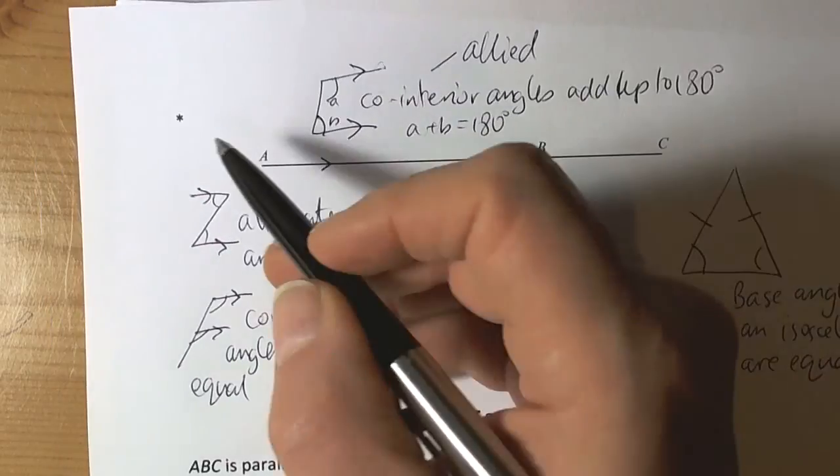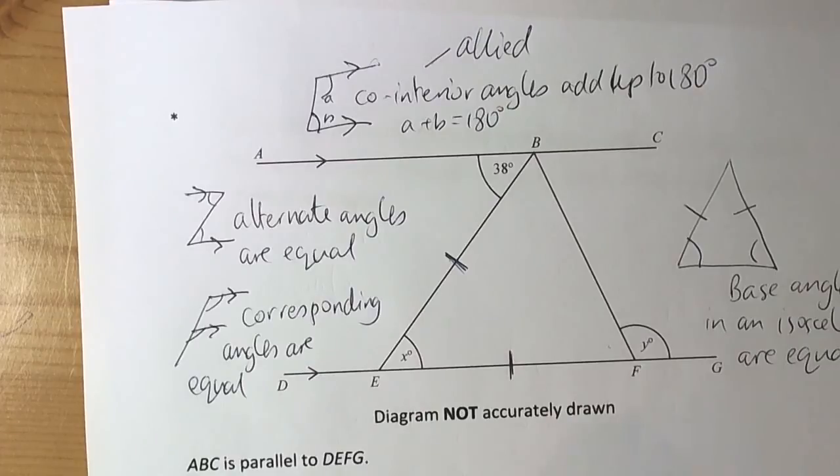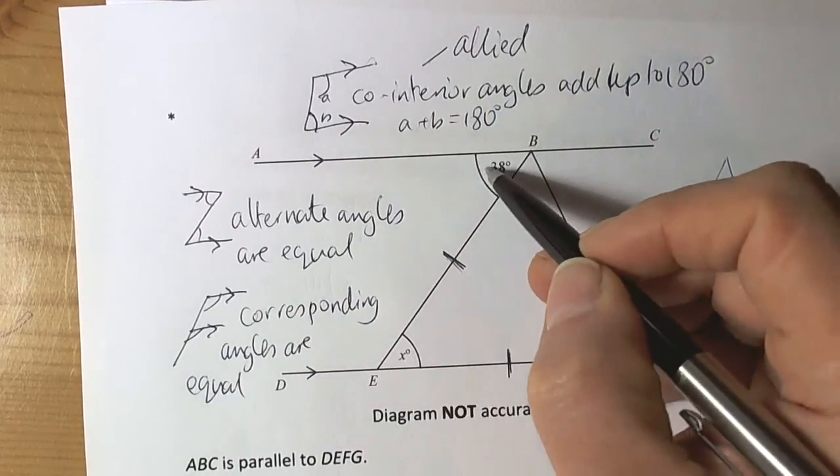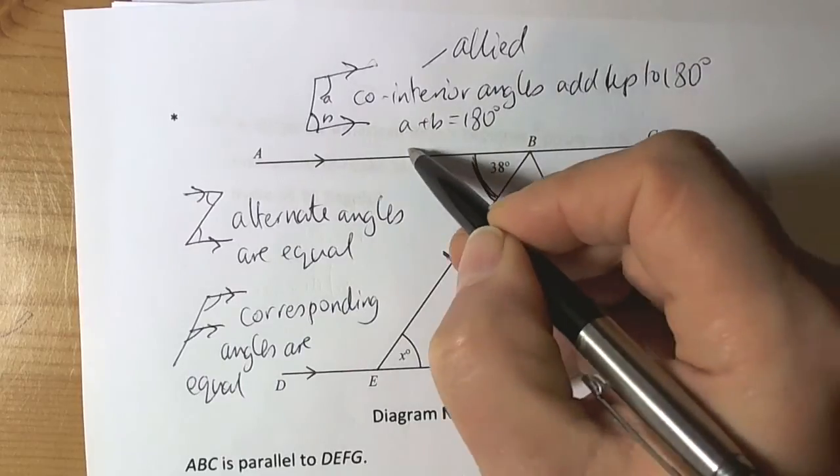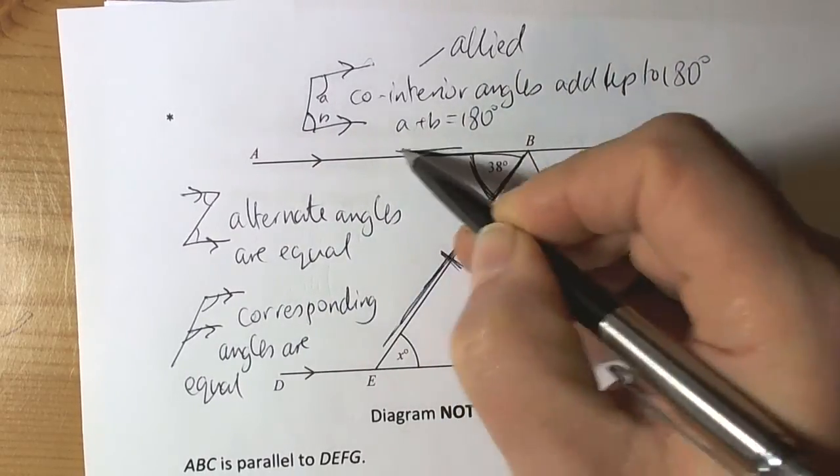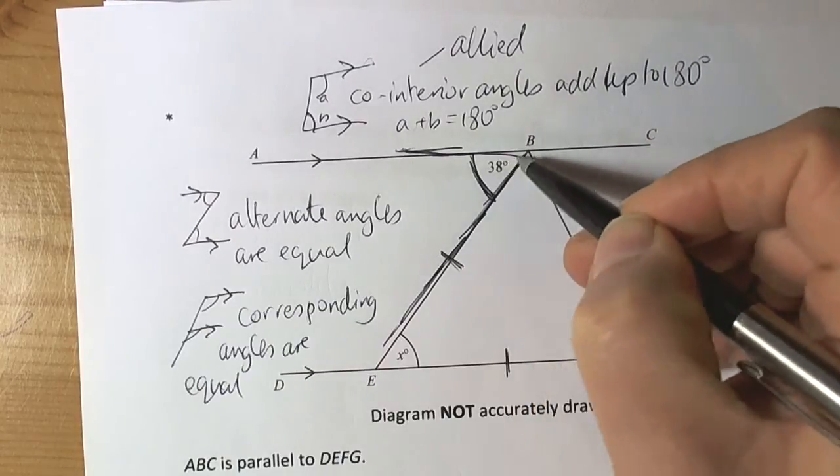The first question says find the value of X. It's a starred question, so it's telling me to find the value but also to say why I found it. If I look carefully here, I've got 38 degrees trapped here, and that forms part of the parallel line with the angles being trapped there.